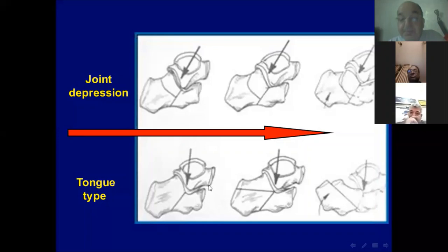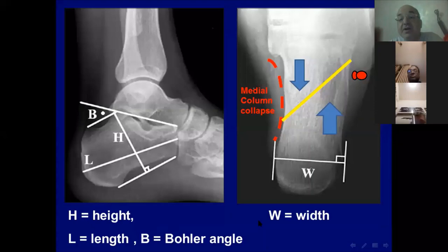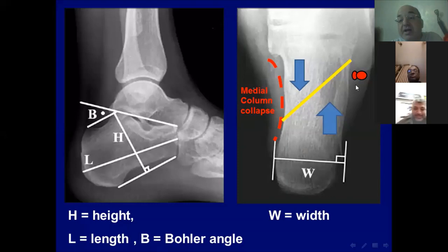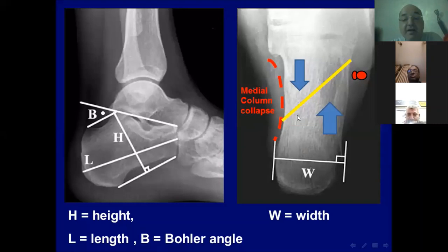In the axial view, the fracture line starts anterolateral and exits posteromedial, creating an anteromedial sustentacular fragment and a posterolateral tuberosity fragment. With axial loading, the sustentacular fragment translates inferomedially and the tuberosity fragment translates superolaterally, causing compression and impingement on the peroneal tendons in the fibro-osseous tunnel. This results in broadening and increased width of the calcaneus, decreased height, and varus of the tuberosity fragment — the main deformity elements of the fractured calcaneus.